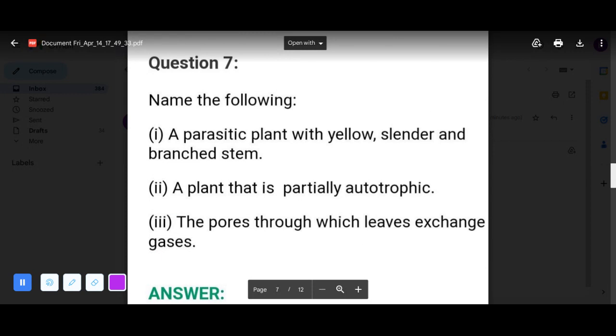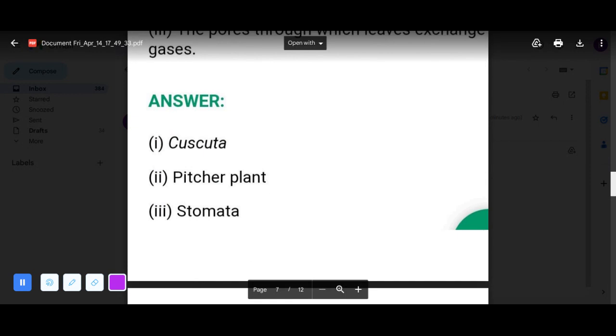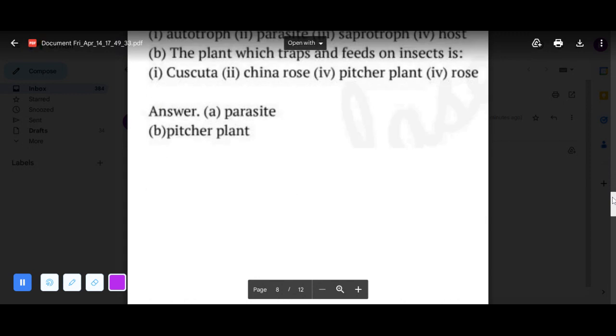Next question: pick the correct answer. Cuscuta is an example of parasite. The plant which traps and feeds on insects is pitcher plant. Now question number nine.